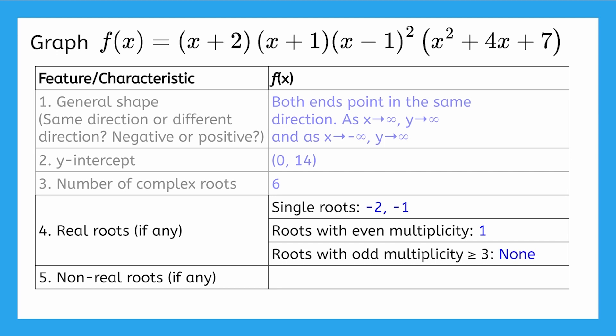There were no roots with odd multiplicity, like 3, 5, etc. And since that final factor is an irreducible quadratic, you can use the quadratic formula to determine that this factor represents the non-real roots, negative 2 plus or minus i times the square root of 3. We can't graph these non-real roots, but I've listed them in my table anyway, because sometimes they can contain useful information.